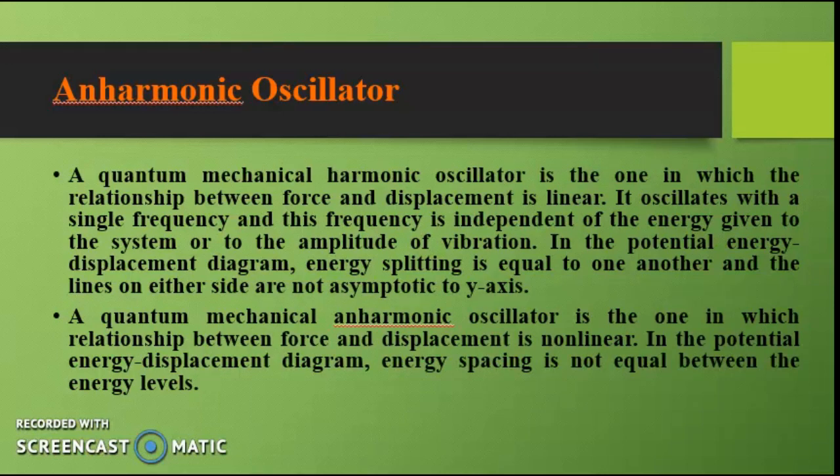A quantum mechanical harmonic oscillator is one in which the relationship between force and displacement is linear. It oscillates with a single frequency, and this frequency is independent of the energy given to the system or the amplitude of vibration. In the typical potential energy vs. displacement diagram, energy splitting is equal, and the lines on either side are not asymptotic to the y-axis.